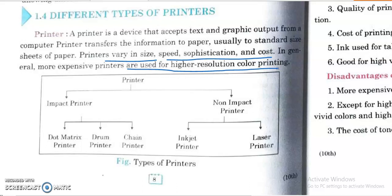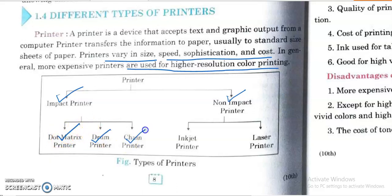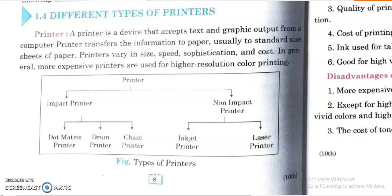Looking at the hierarchical table of printers, we can understand that printers are basically of two types: impact printers and non-impact printers. Impact printers, as the name suggests, produce a little noise when printing. Examples include dot matrix printers, drum printers, and chain printers. Non-impact printers produce less sound, and include inkjet printers and laser printers.